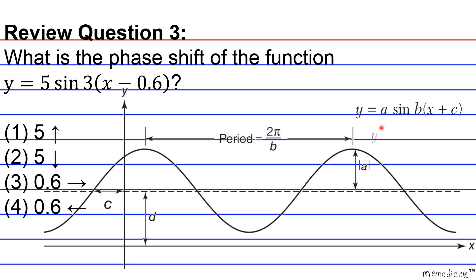In this problem, we're told that the phase shift is 0.6 units, and that's negative, so therefore it's 0.6 units to the right. Therefore, the correct answer choice is going to be answer choice 3. And for those of you who like the ABCD multiple choice system, it would be answer choice C, which also rhymes with 3.